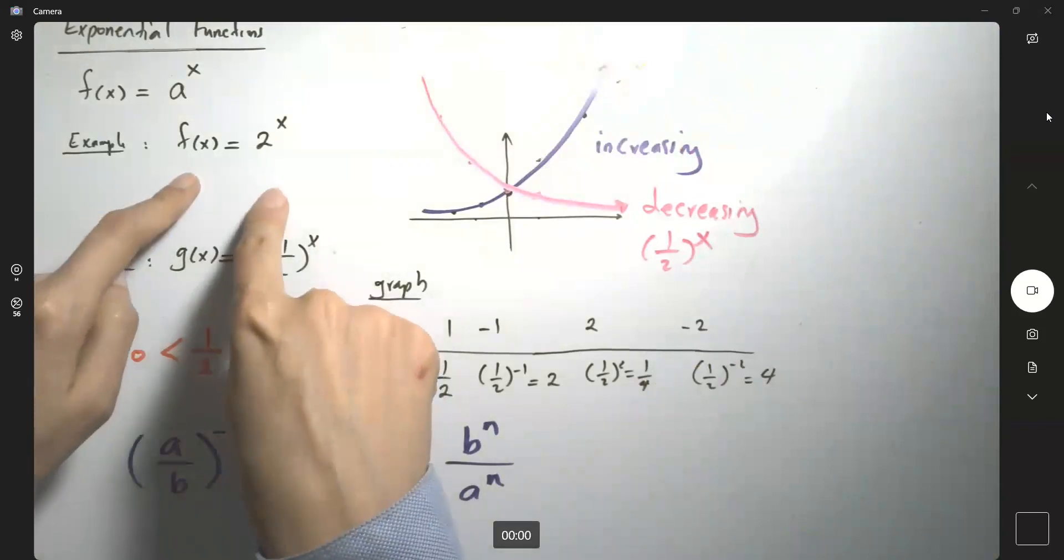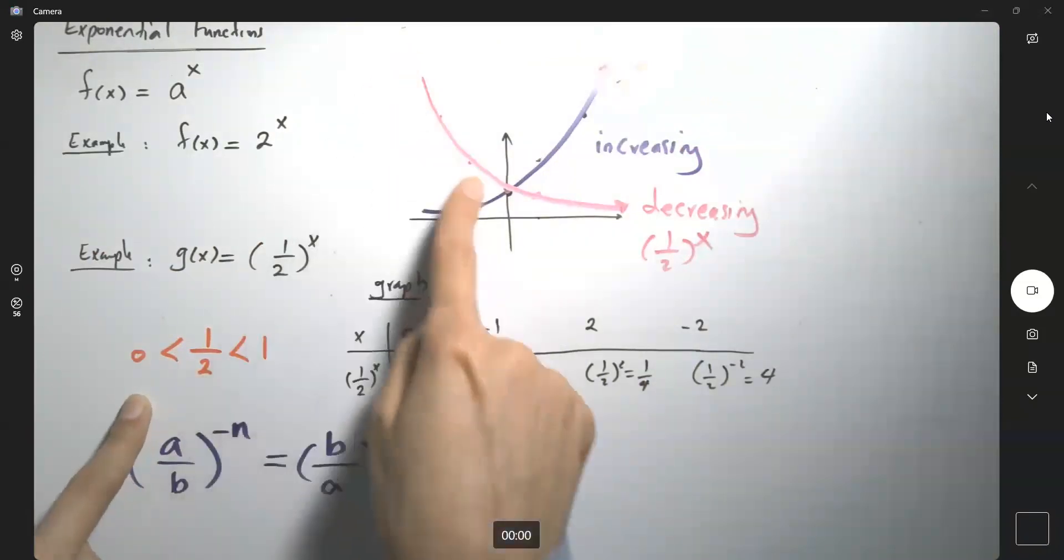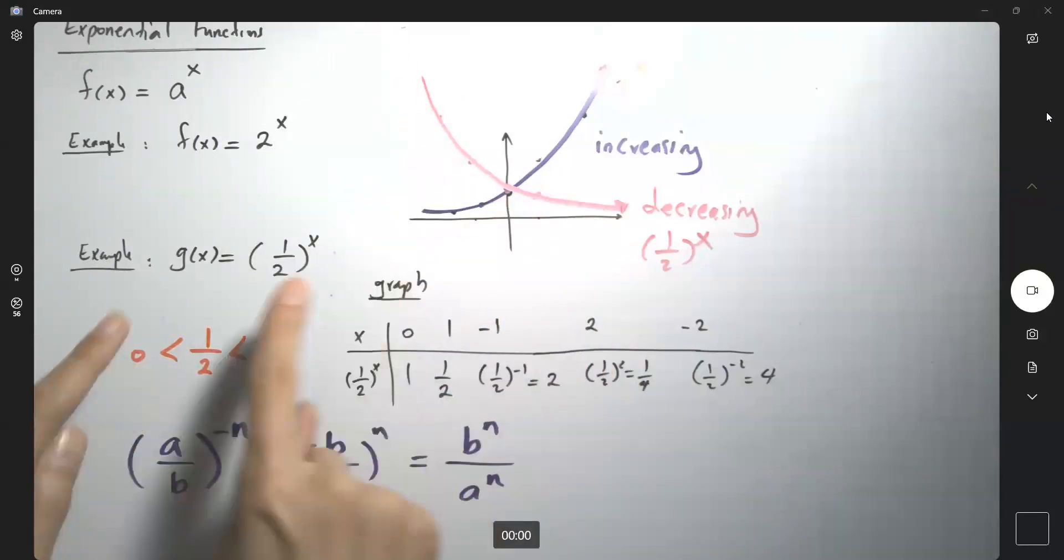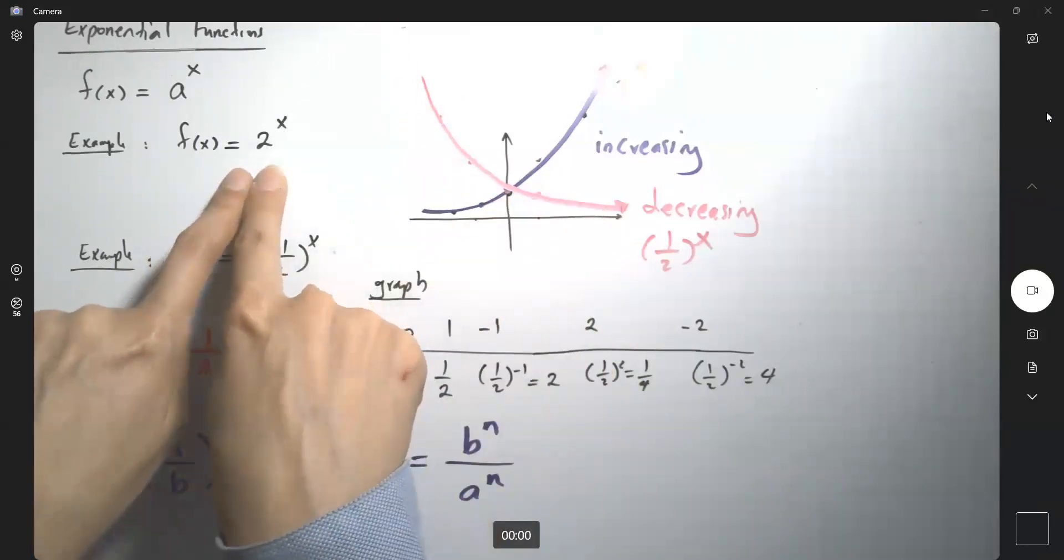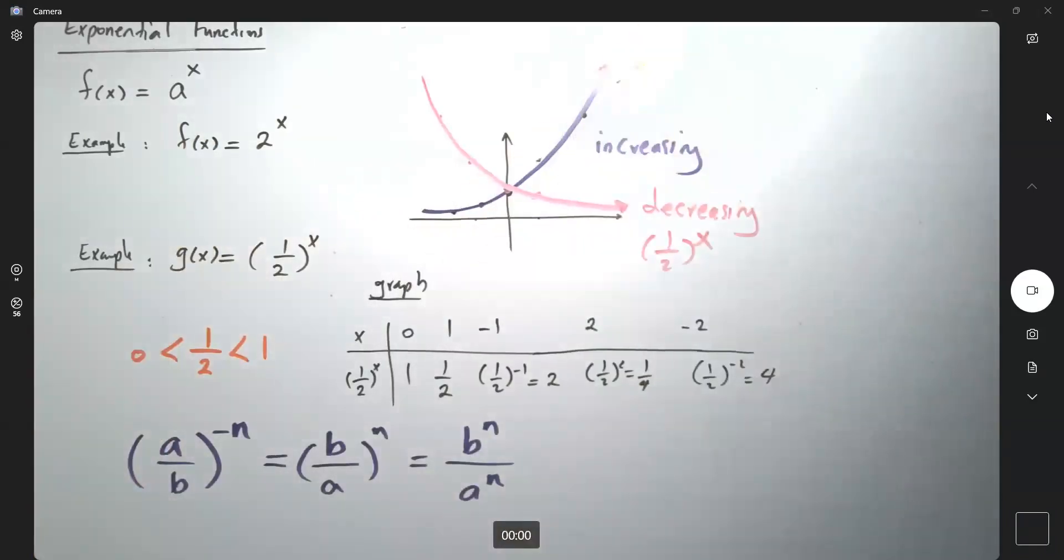The difference between 2^x and (1/2)^x: a half is a value where the base is between 0 and 1, so we have a decreasing function. As long as a is larger than 1, you're going to get an increasing function.